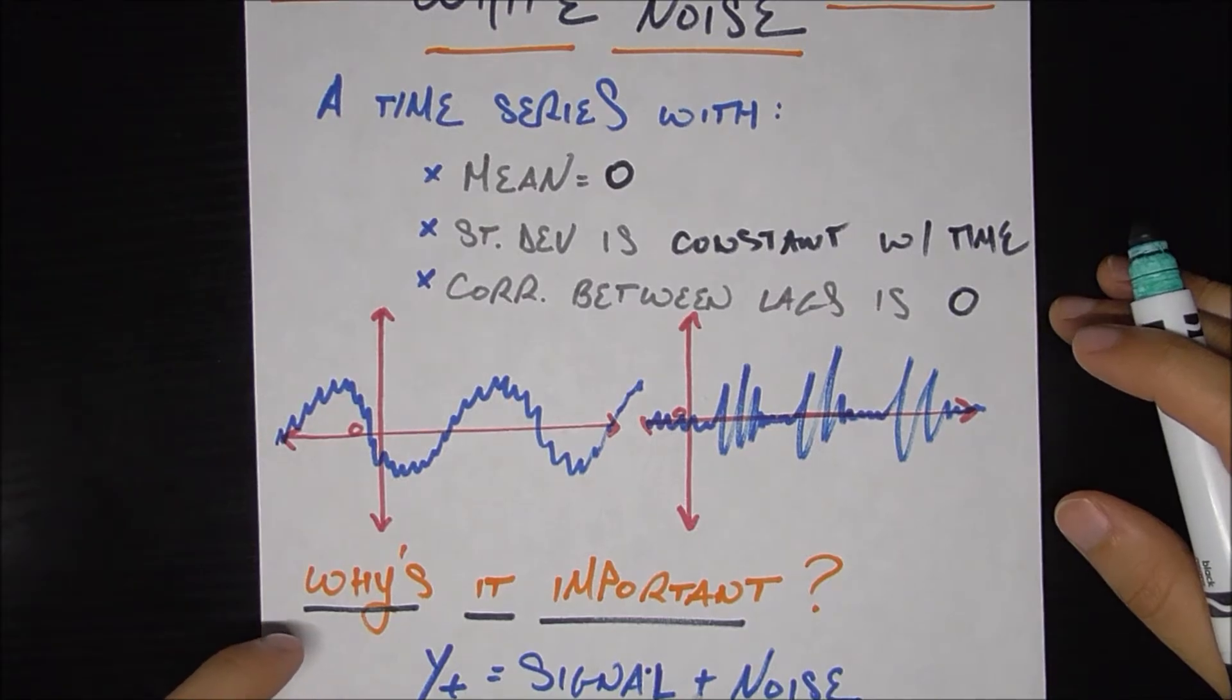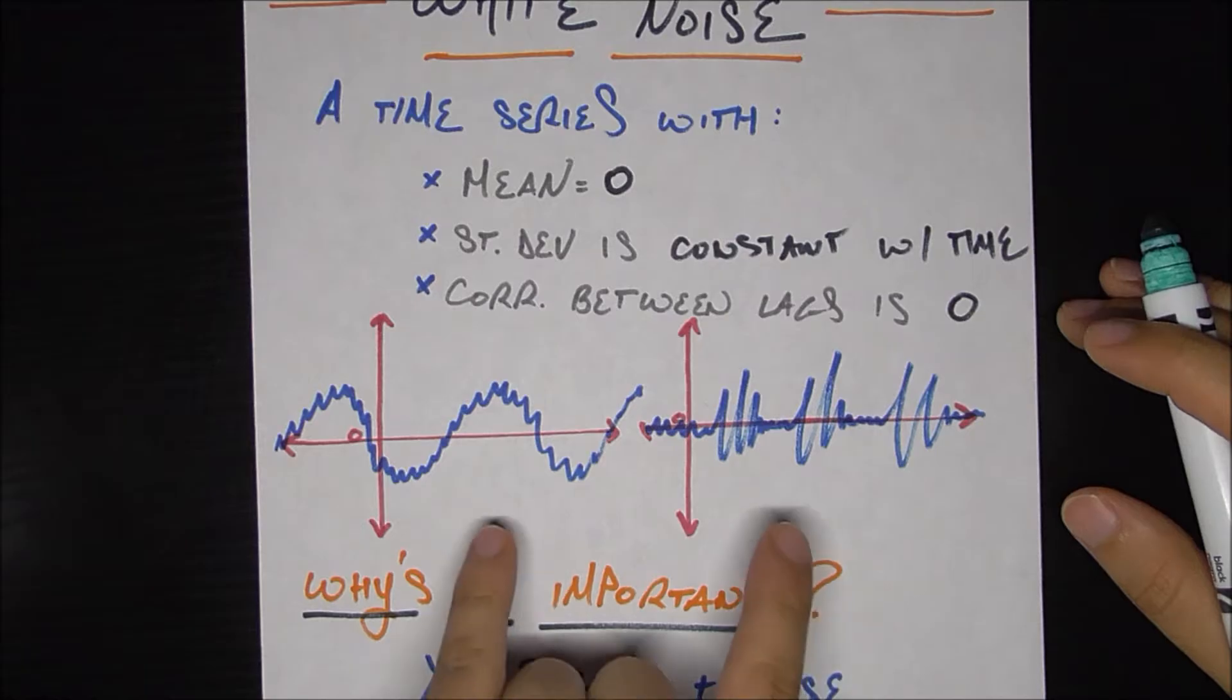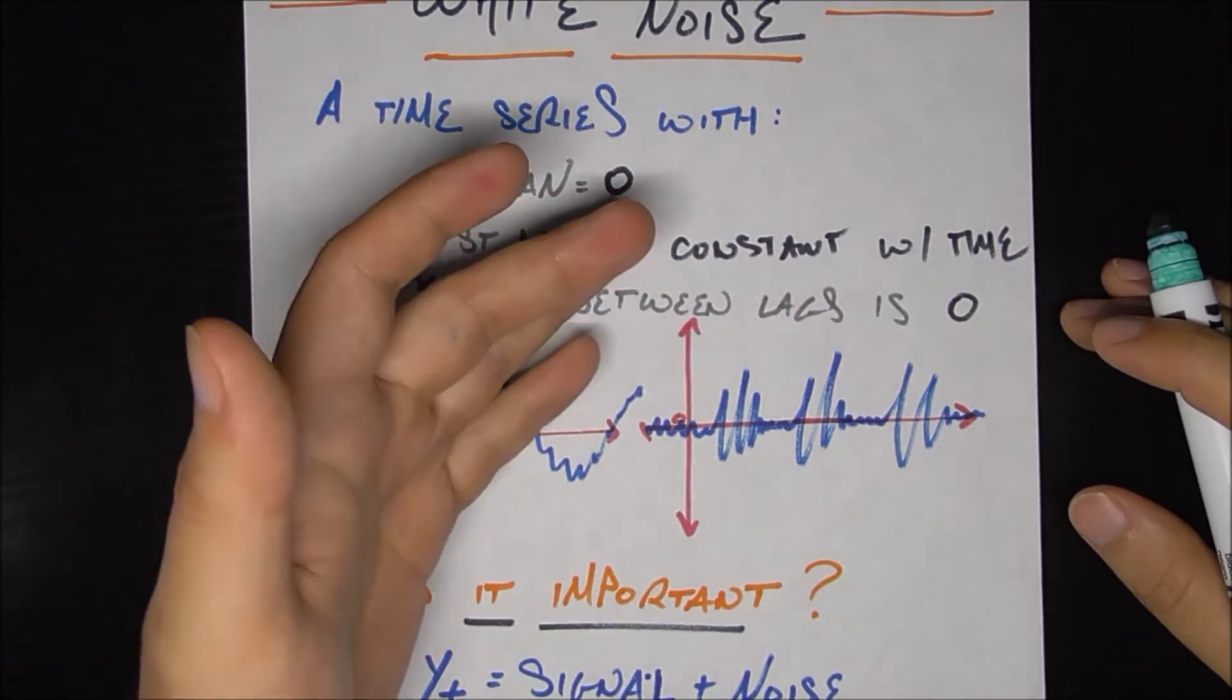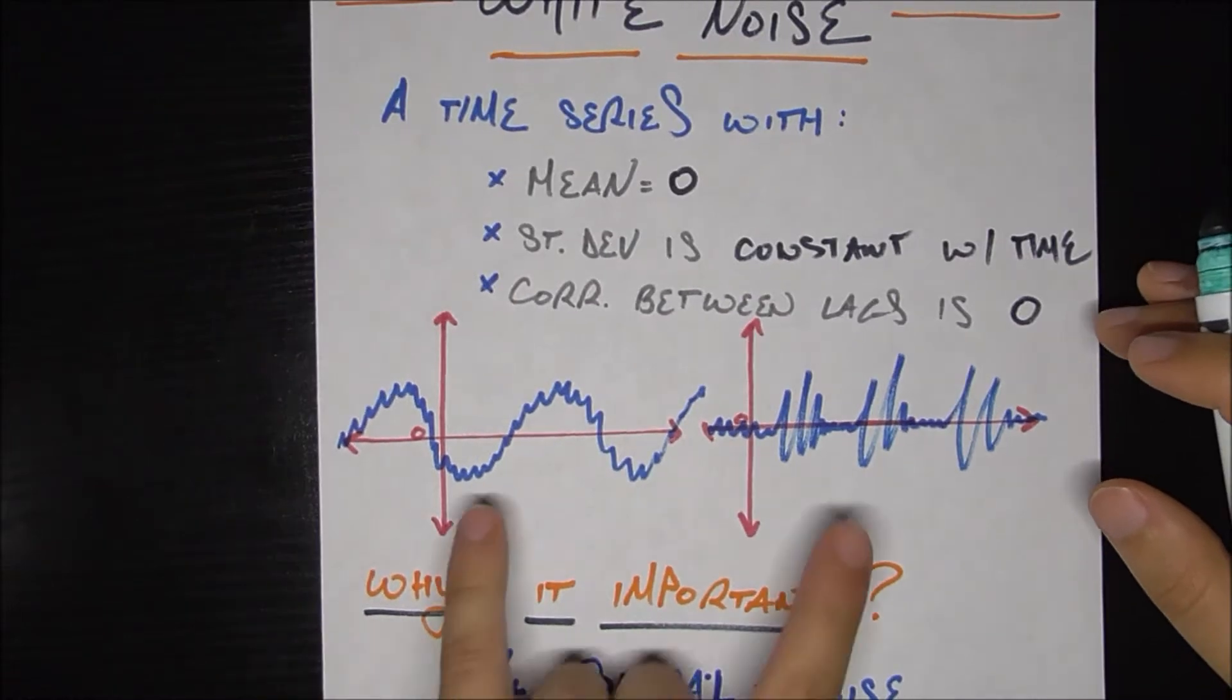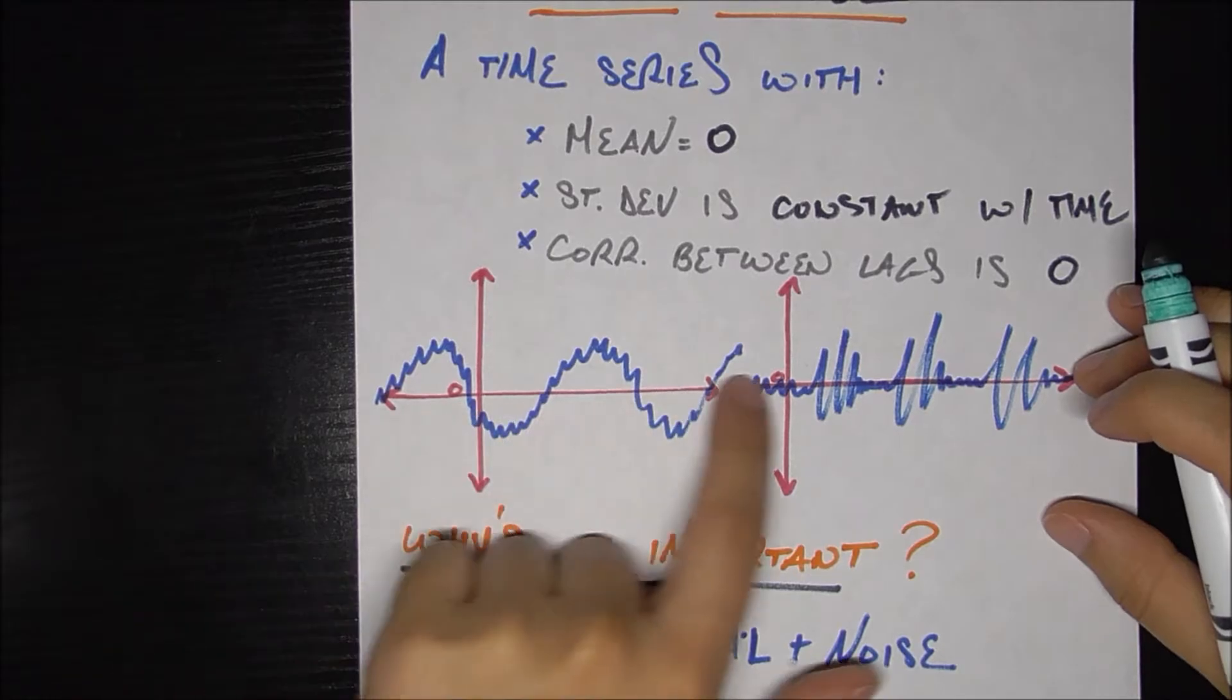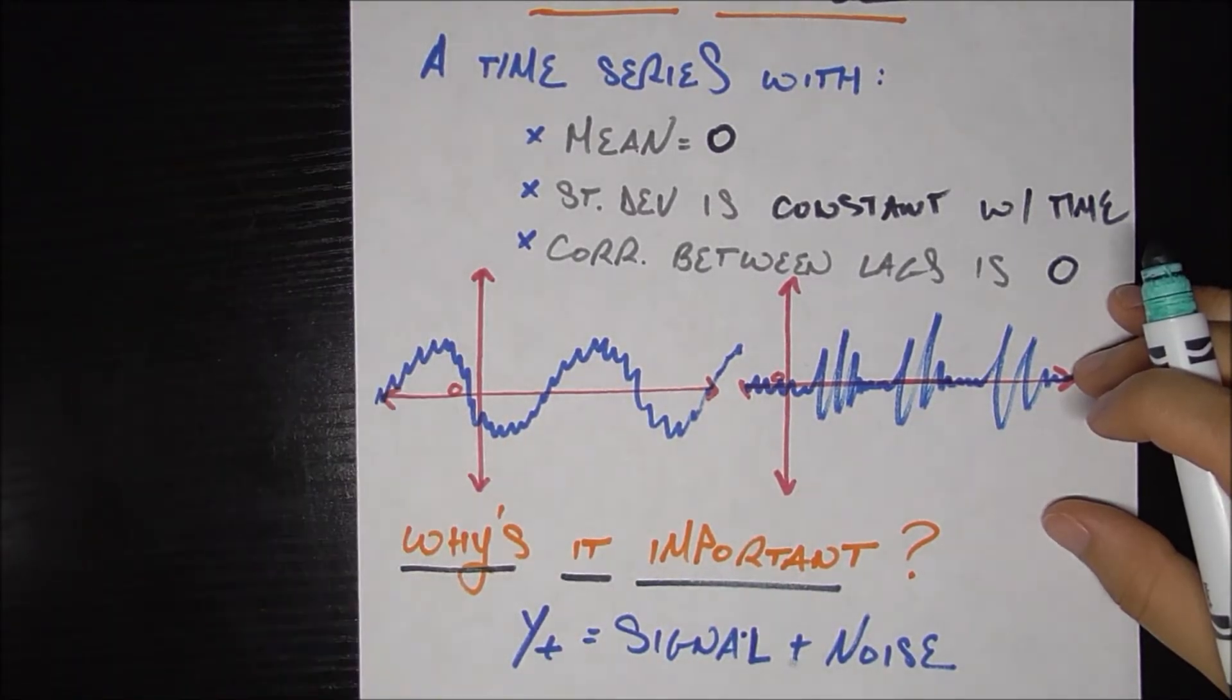I think the best way to understand white noise is actually to look at a couple of time series that violate the white noise criteria for various reasons and that'll help you get an idea of when things are not white noise. So let's look at these two counter examples down here. Here's one, let's see which one this violates. So the mean seems to be zero, which is the horizontal line here, so definitely not violating the first one.